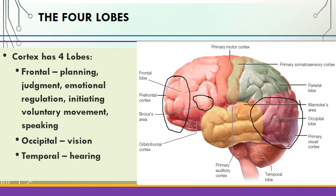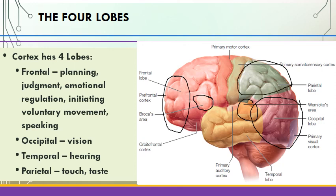The temporal lobe is involved in hearing, listening, and sounds. A section of it known as Wernicke's area helps process language that we are hearing from people. The parietal lobe deals with sensations — touch and taste, like when somebody touches your skin. And then there are two cortices at the top: the primary motor cortex and the primary somatosensory cortex, which deal with movement, touch, feelings, and sensations.